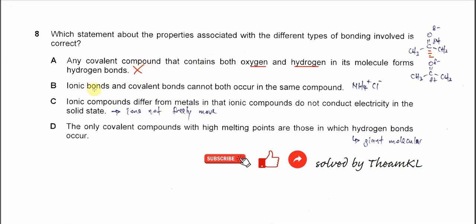B. Ionic bonds and covalent bonds cannot both occur in the same compound. So this one is also wrong.